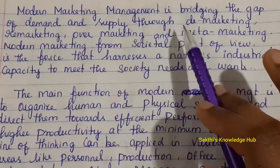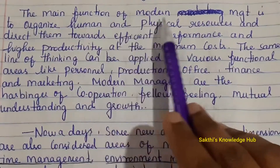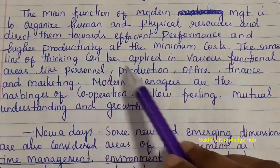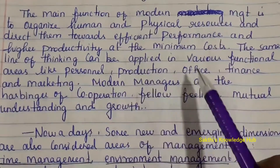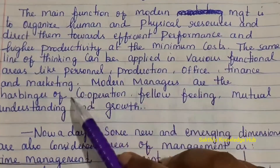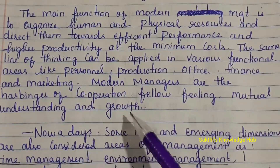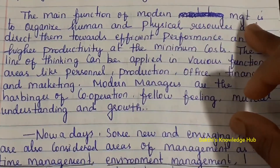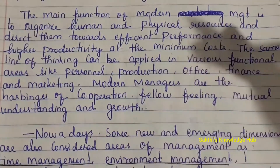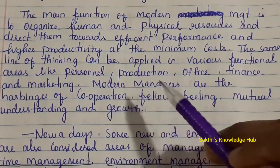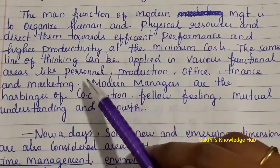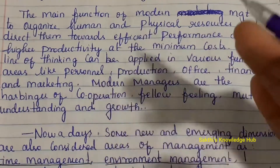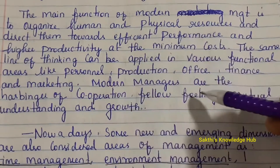The main function of modern management is to organize human and physical resources and direct them towards efficient performance and higher productivity at minimum cost. This line of thinking applies across all functional areas: personal, production, office, finance, and marketing. Modern managers are the harbingers of corporation, fellow feeling, mutual understanding, and growth.